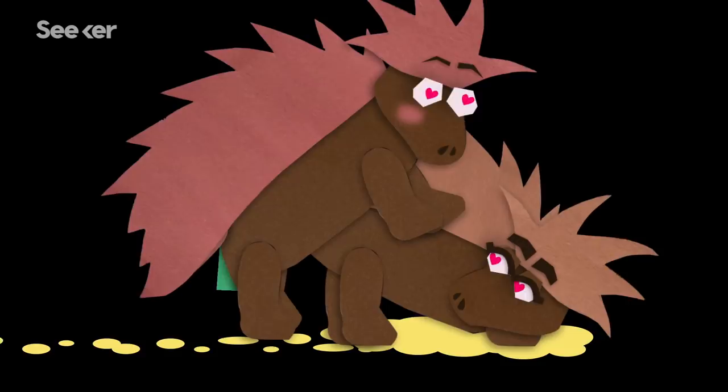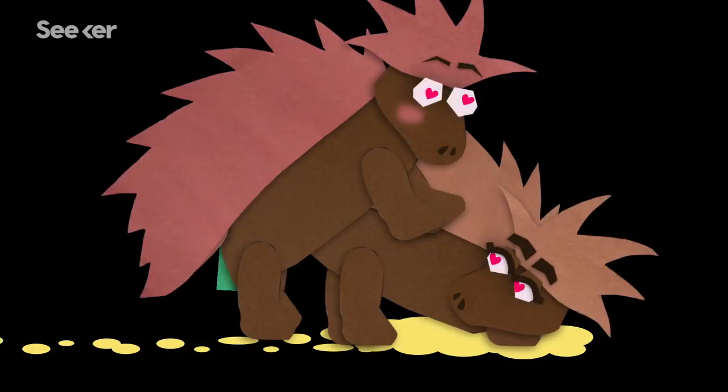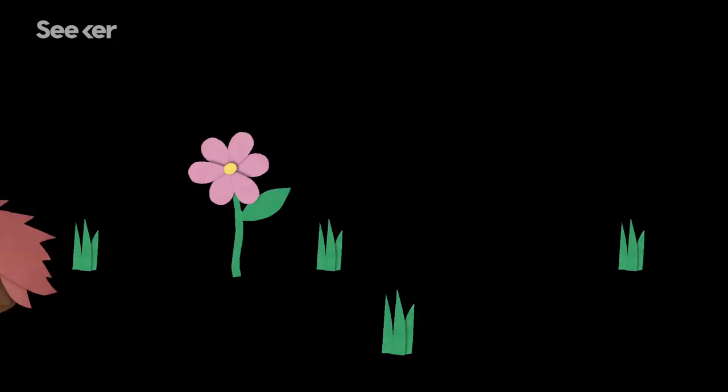The male will then copulate as many times as she will allow before heading off to find another willing partner. After all he's only got a few hours a year to make this happen so he better hydrate and get on with it.